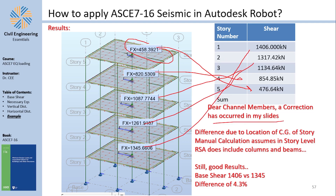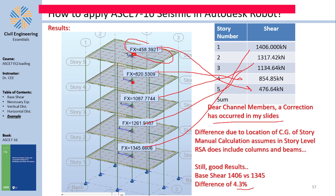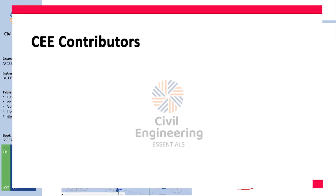Stories five through one all match closely between hand calculation and Robot. Channel members, please note the corrected values differ slightly. Robot gives results with a difference of only about 4.3%, which is acceptable. The difference arises partly because in the hand calculation the center of gravity is assumed exactly at the floor level, while Robot accounts for it being slightly lower due to the columns. A 4% difference is insignificant for practical purposes.